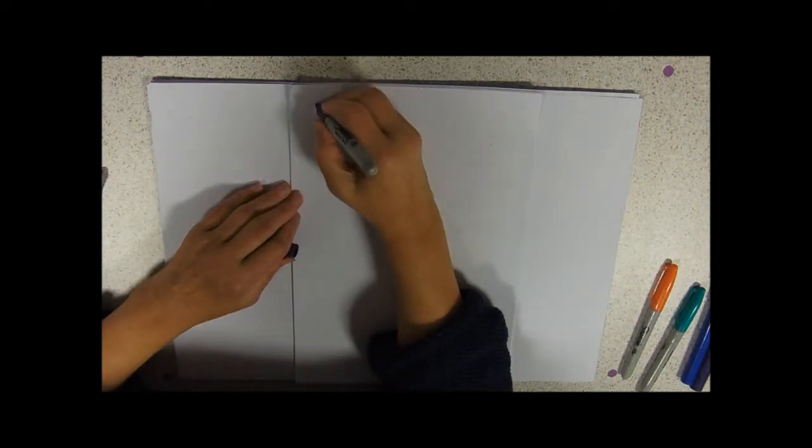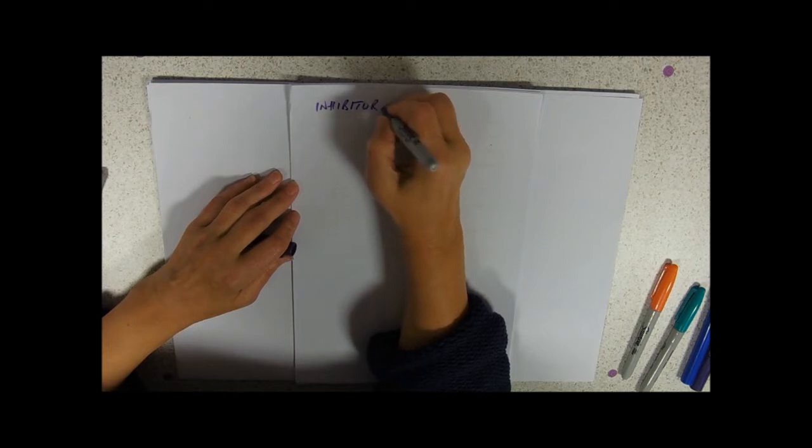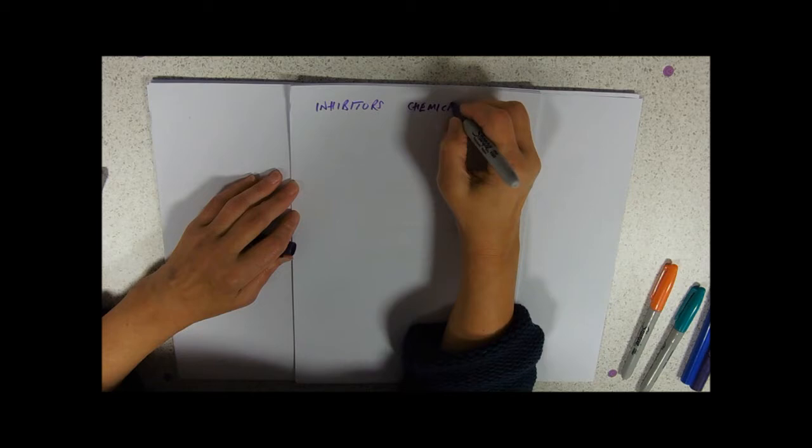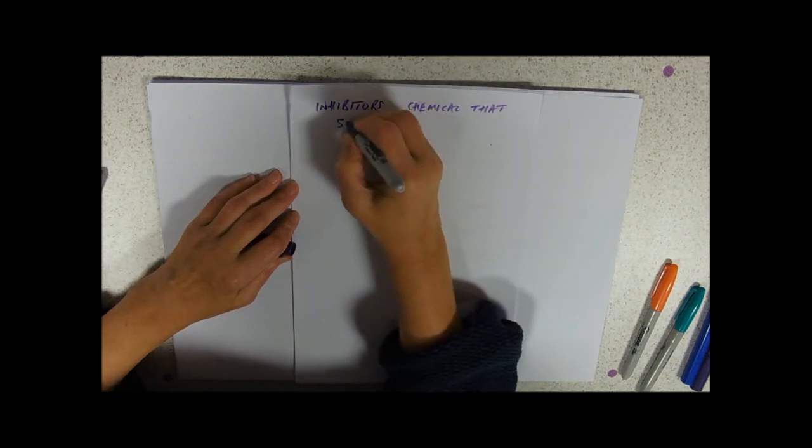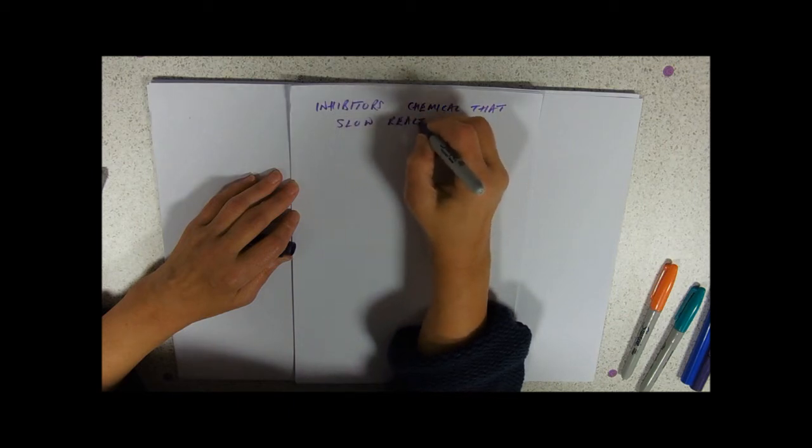Okay, let's deal with inhibition. Inhibitors are chemicals usually. These are chemicals that slow reactions down.